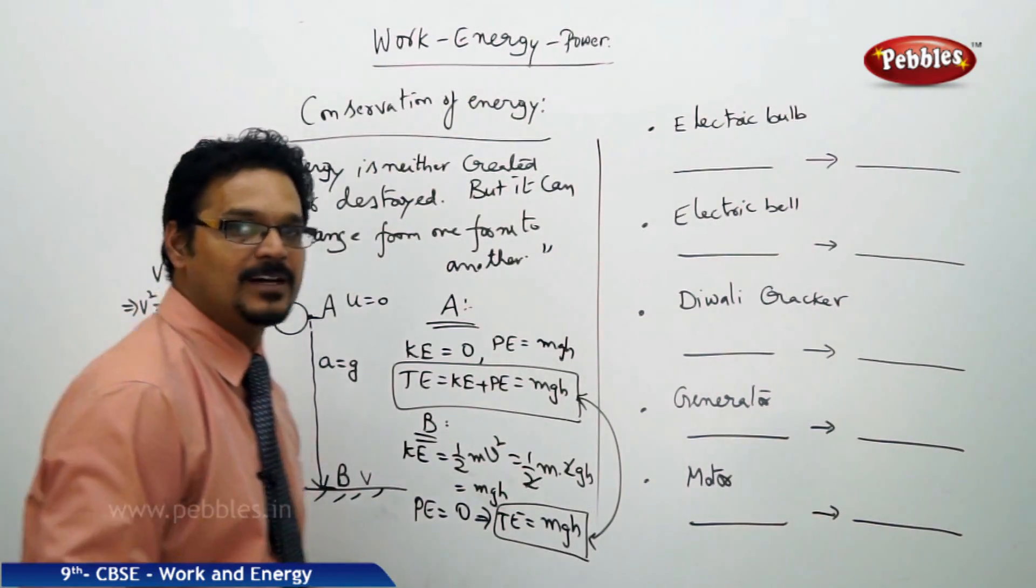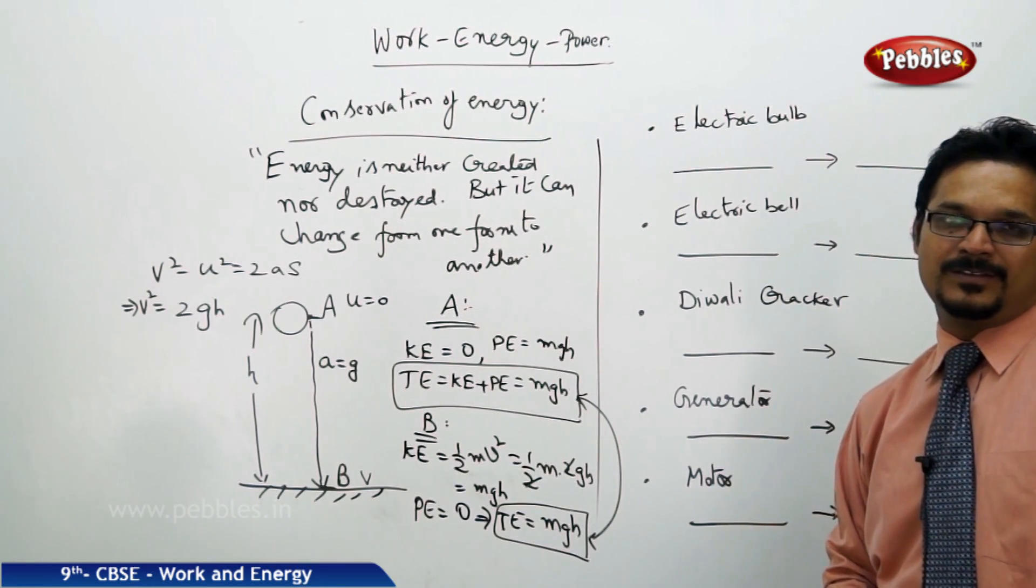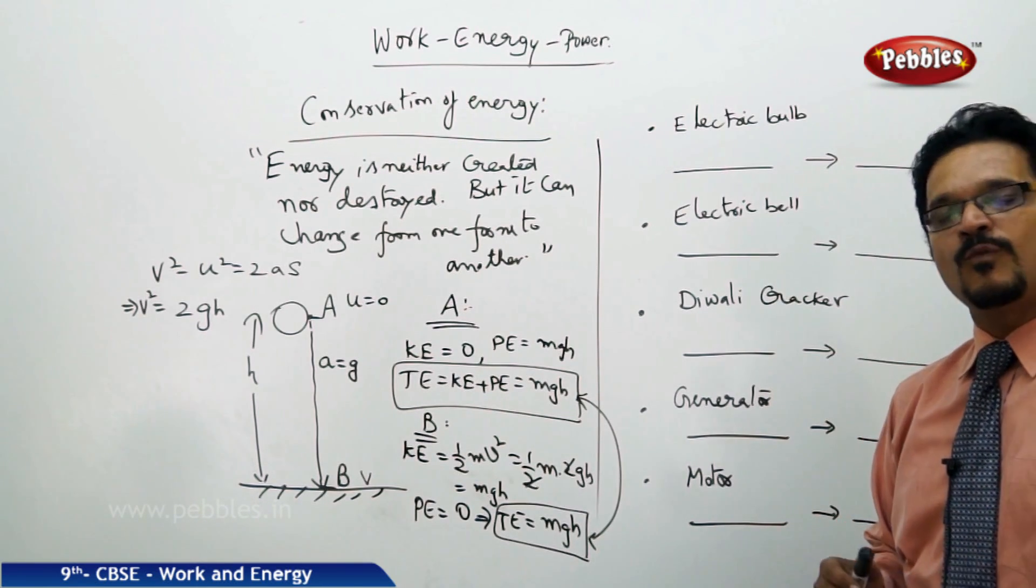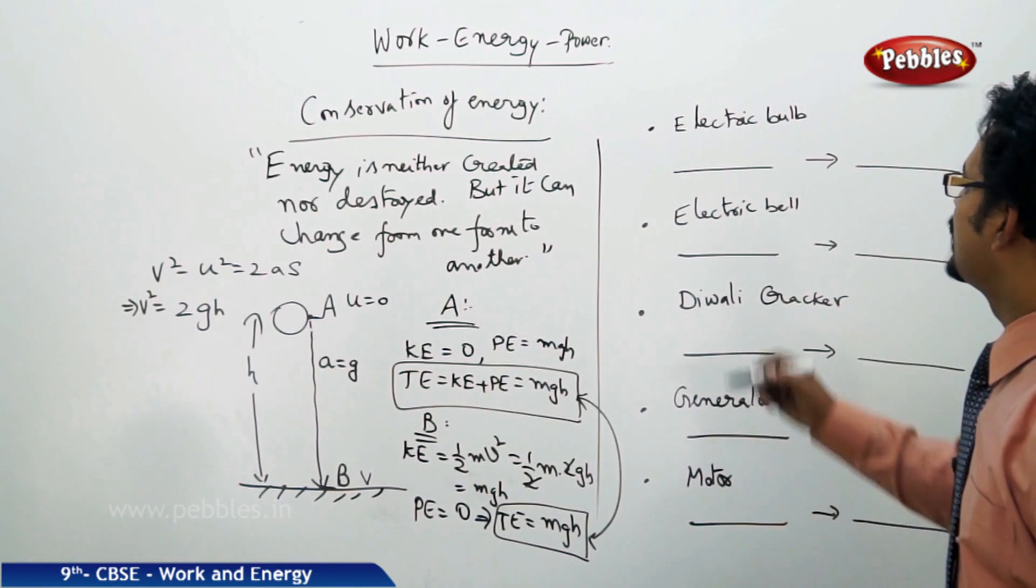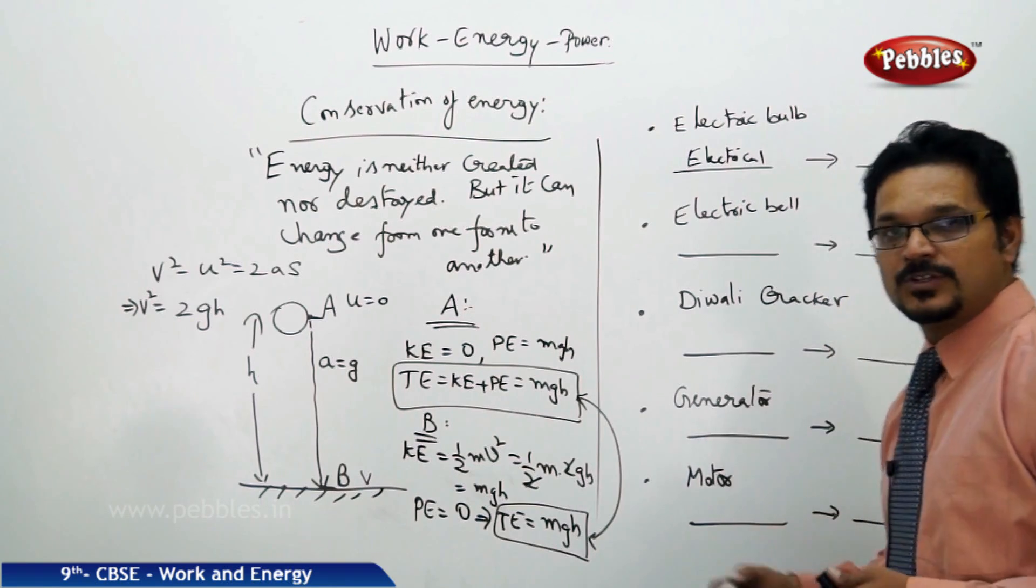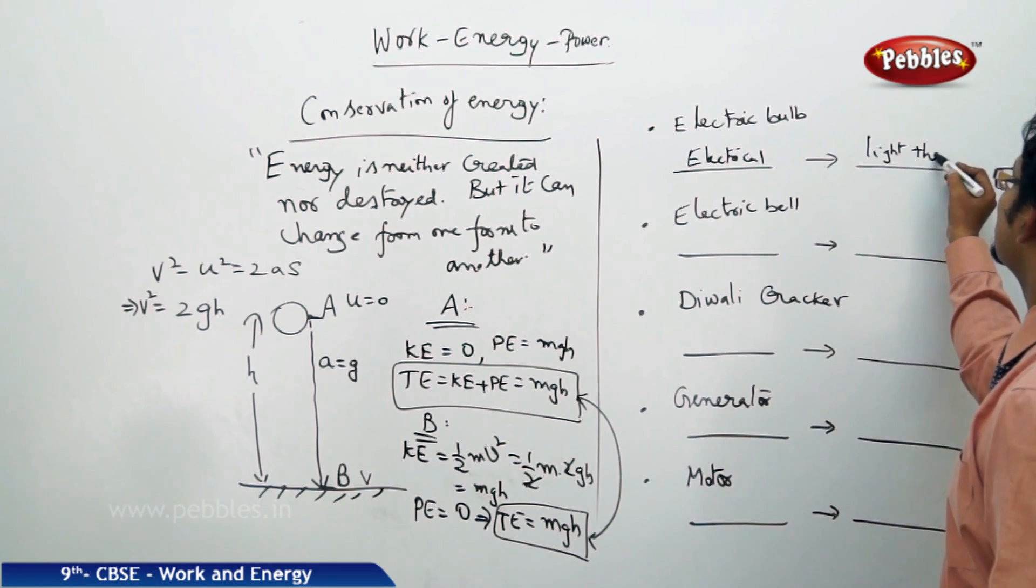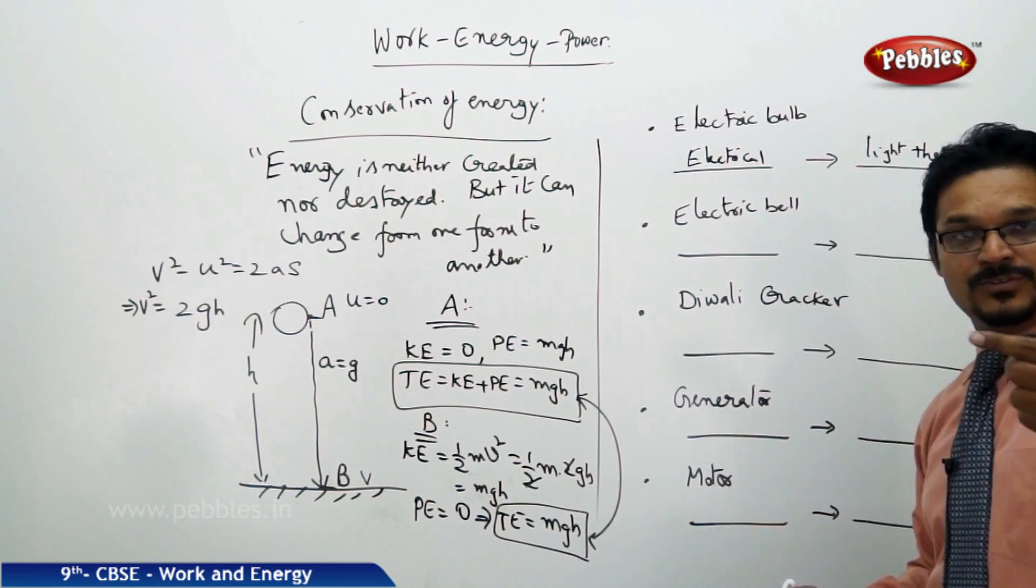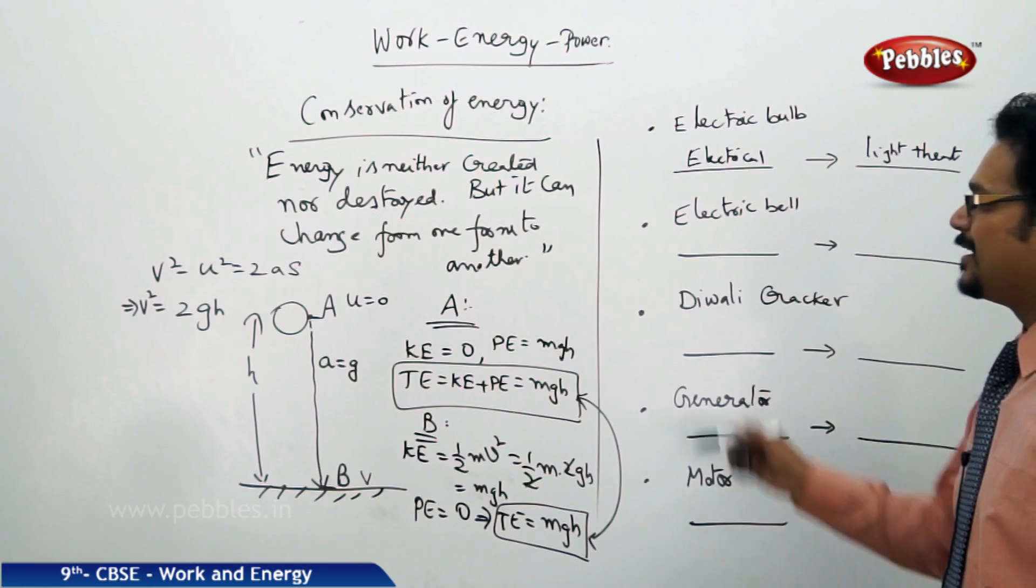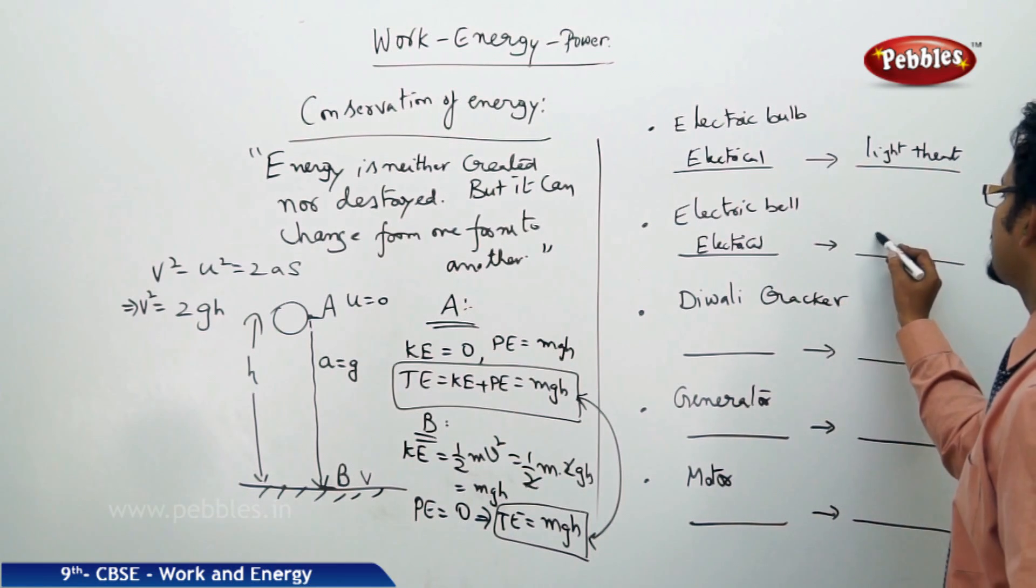Let me give you some more examples. Electric bulb: we are using so much energy to let the electric bulb function. But here also one form of energy converts into other forms. So here the electric bulb converts electrical energy to light, plus heat. Some sort of heat is also released; if you touch the bulb after some time you feel hot. Electrical bell: here also electrical energy converts to sound energy.